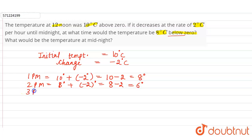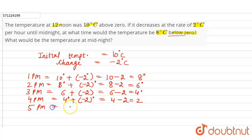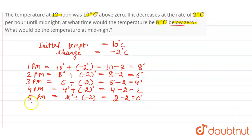Temperature at 3 pm will be equal to 6 degrees plus minus 2 degrees, which is equal to 6 minus 2 = 4 degrees. At 4 pm, the temperature will be equal to 4 degrees plus minus 2 degrees, which is equal to 4 minus 2 = 2 degrees. At 5 pm, the temperature is 2 degrees plus minus 2 degrees, so at 5 pm the temperature is 2 minus 2 = 0 degrees.